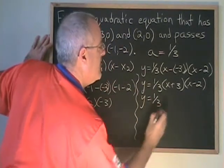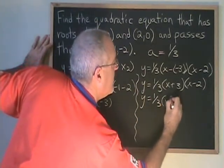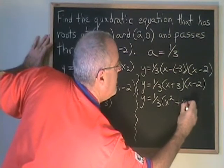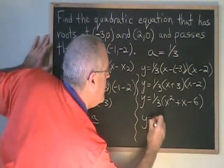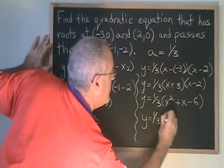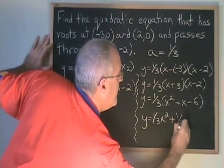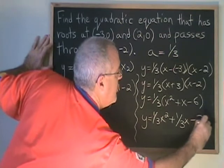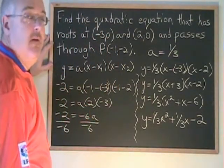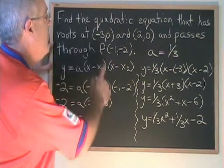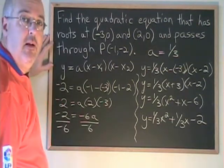x plus 3 times x minus 2 is x squared plus x minus 6. So our final equation is y equals 1/3 x squared plus 1/3 x minus 2. This is how you find the equation of a quadratic when you are given both zeros and another point that the curve passes through.